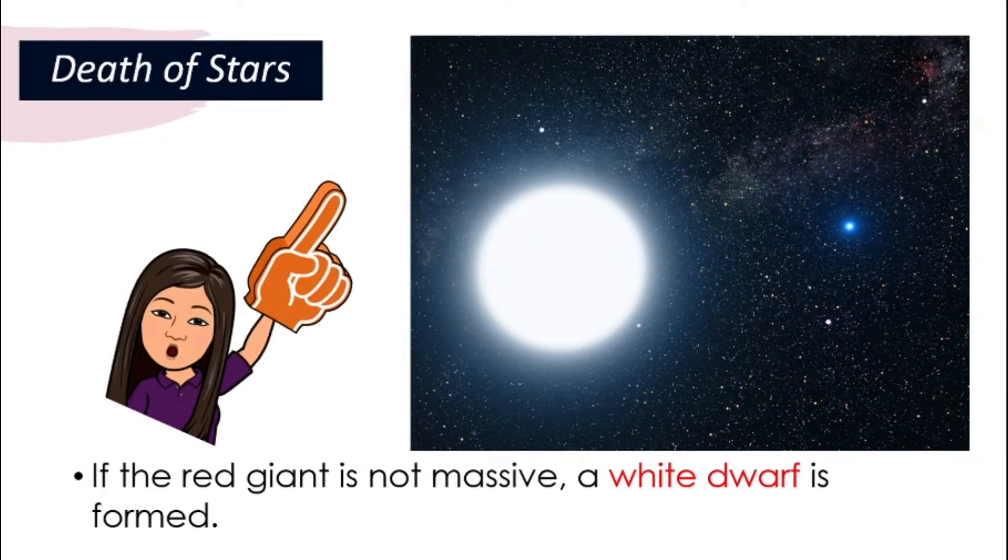If the red giant is not massive, meaning it is big but not too big, then a white dwarf will be formed.